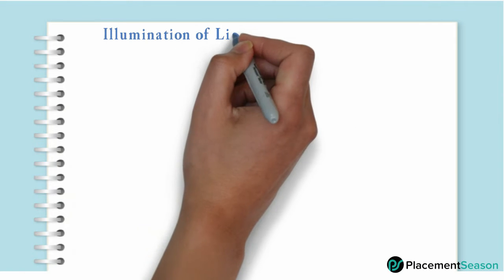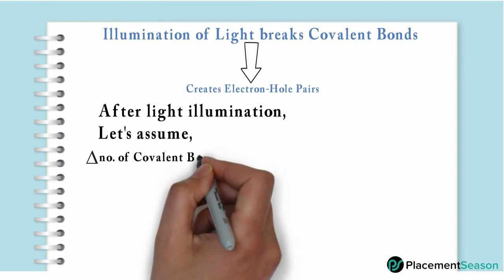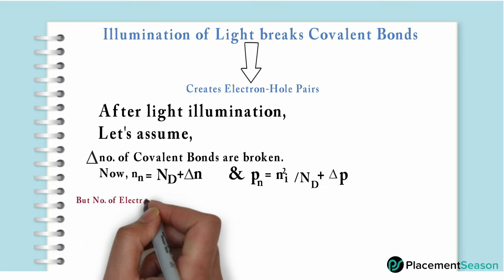Illumination of light breaks covalent bonds and creates electron-hole pairs. After illumination, let's assume Δ number of covalent bonds are broken. Then the majority and minority carrier equations will change.